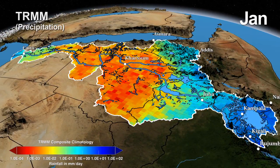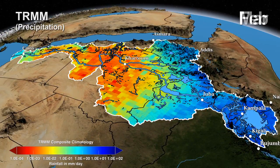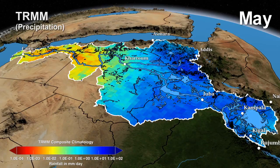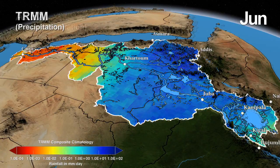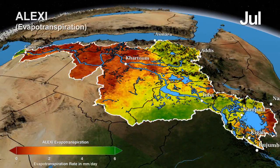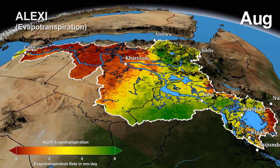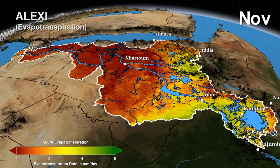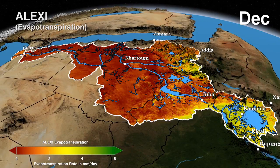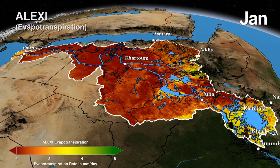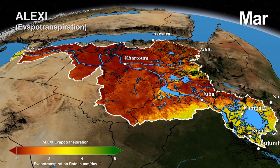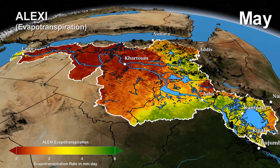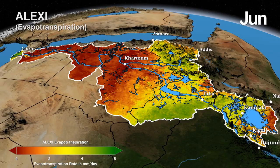This precipitation cycle drives water flow through the Nile River system. But rainfall is only part of the picture, since the region experiences high rates of evaporation, with more water leaving the basin through evaporation than by water flow.